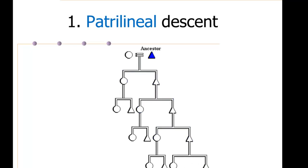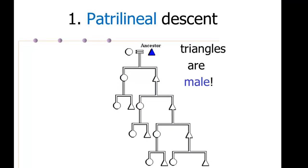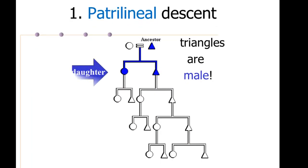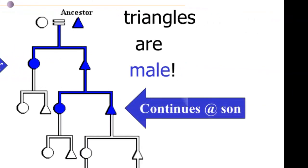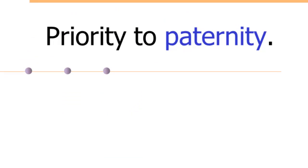And here's an animation of that. In this animation, the triangles represent males. And if you watch this go through a couple times here, you can see that wherever patrilineal descent reaches a daughter, it includes her, but it stops with her. And wherever patrilineal descent reaches a son, it continues through that son. So another way to think of this is that priority is given to paternity in systems of patrilineal descent.